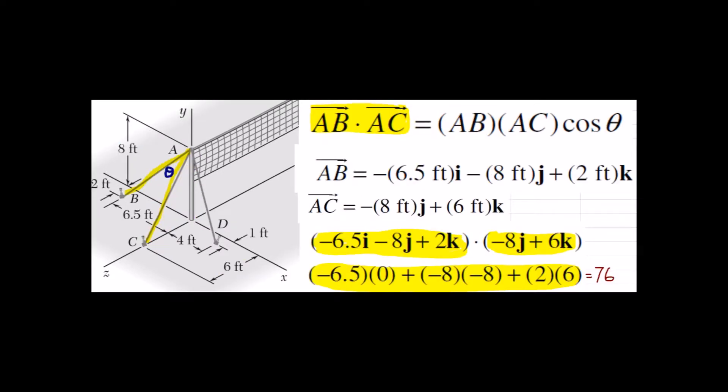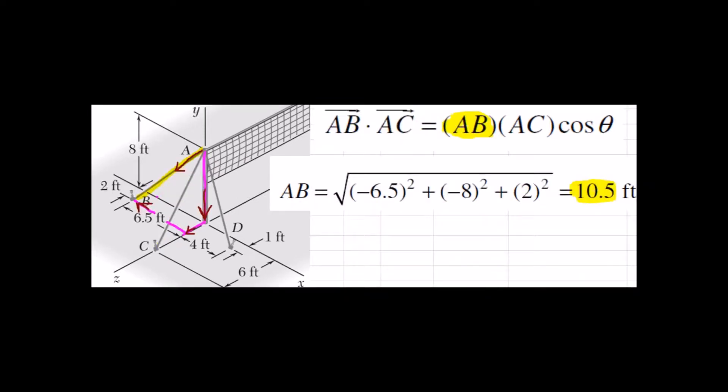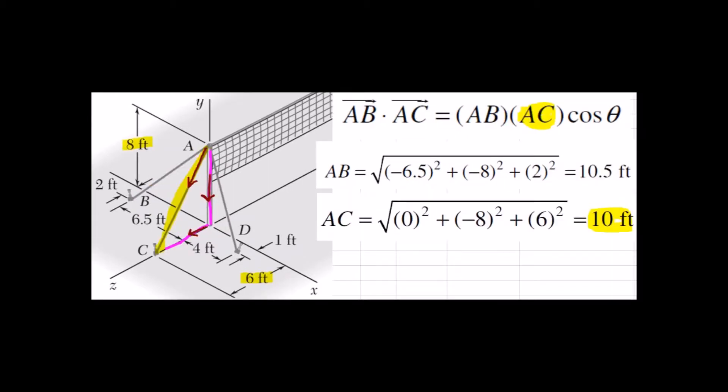Then we're going to apply the dot product, I times I, J times J, K times K. Add all those together and that's the left-hand side. For the magnitudes, we're going to use the I, J, K components again. This time A squared plus B squared plus C squared gives us the length of each of these cables.